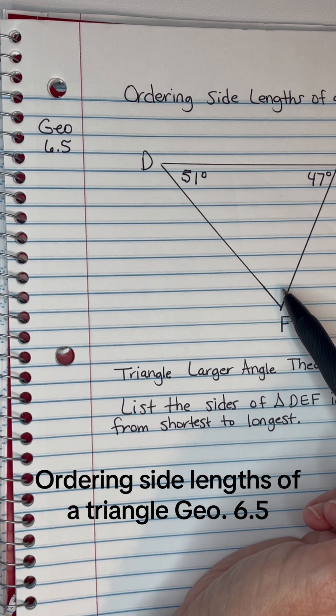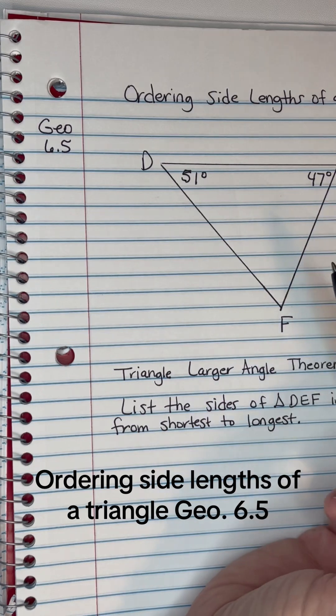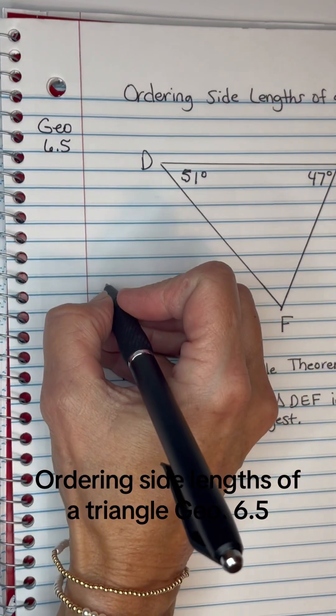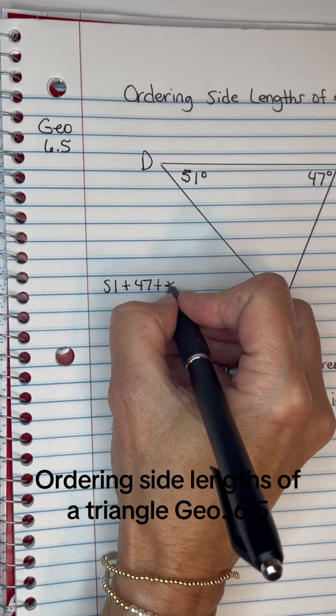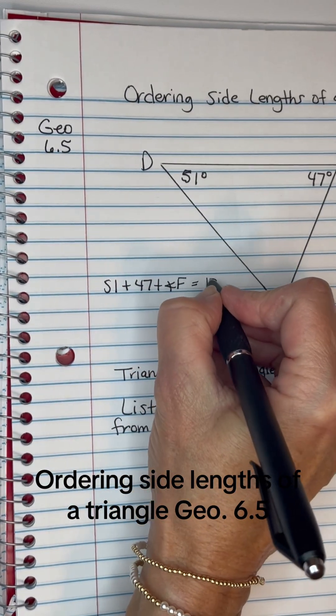We know that the triangle sum theorem says that there's 180 degrees in every triangle. So if I take 51, add it to 47, add it to angle F which I'm looking for, it has to equal 180.